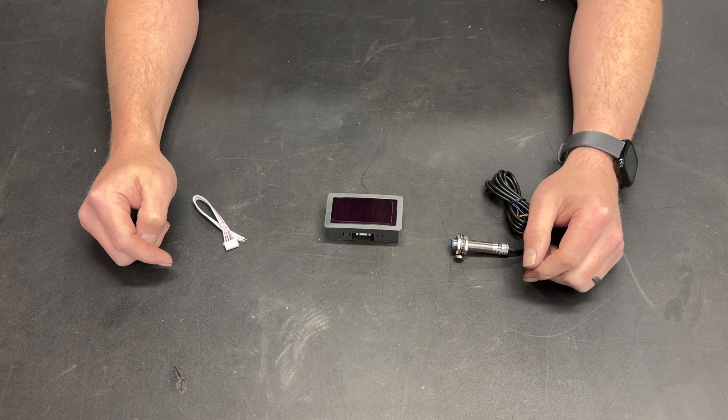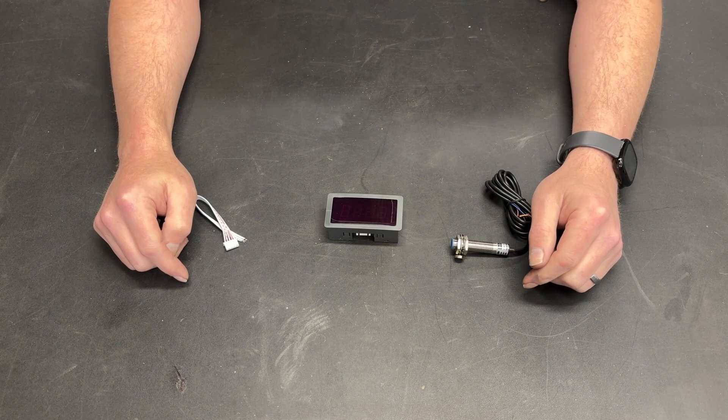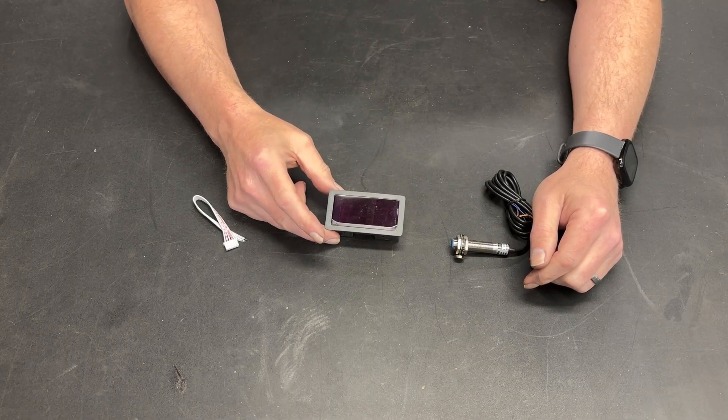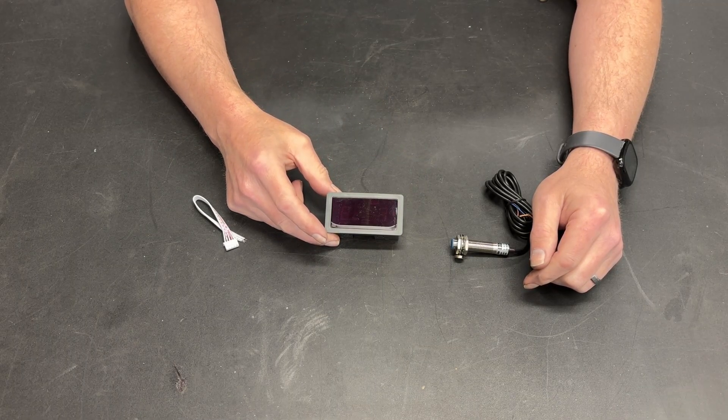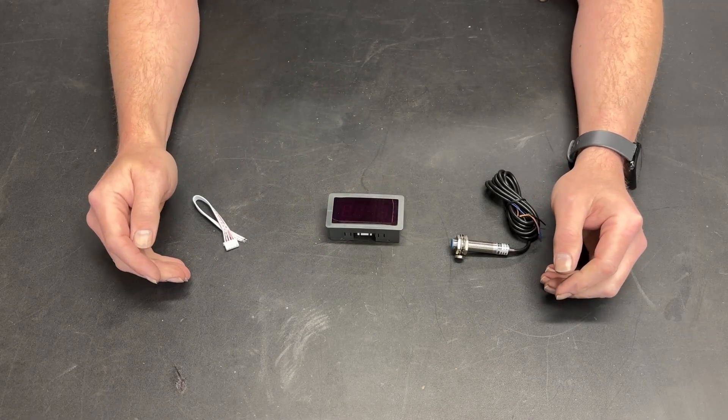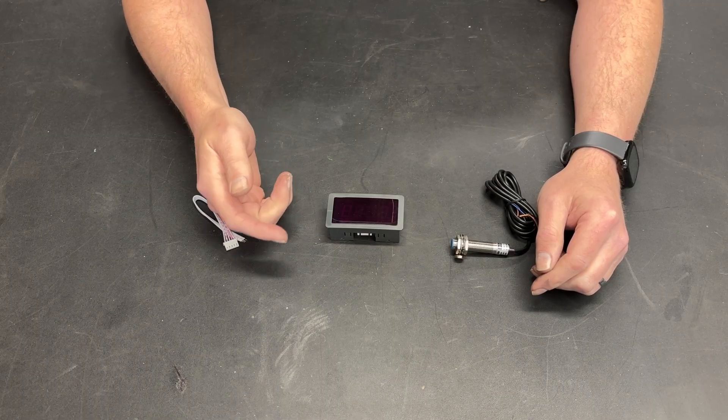Greetings fellow DIYer and welcome to my video. If you look online, there are many different digital readouts. But when you look at the inexpensive digital RPM meter, the basic ones look like this. They are DC powered and they come in red, blue, and green.